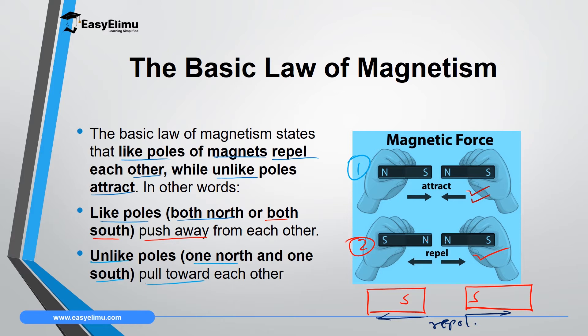Since we have only two poles of a magnet — north pole and south pole — when we talk about like poles, we mean north pole and north pole, or south pole and south pole close to each other; in that case, repulsion takes place. When we have north pole close to the opposite south pole, attraction takes place. This is summarized in the basic law of magnetism: like poles repel while unlike poles attract.